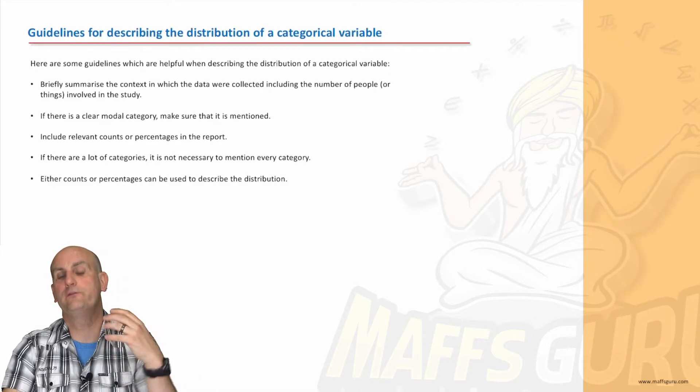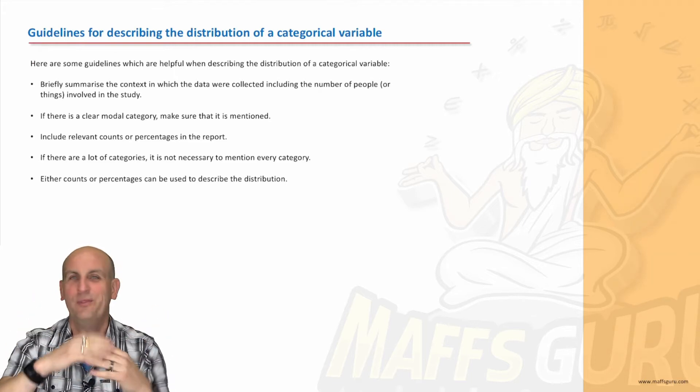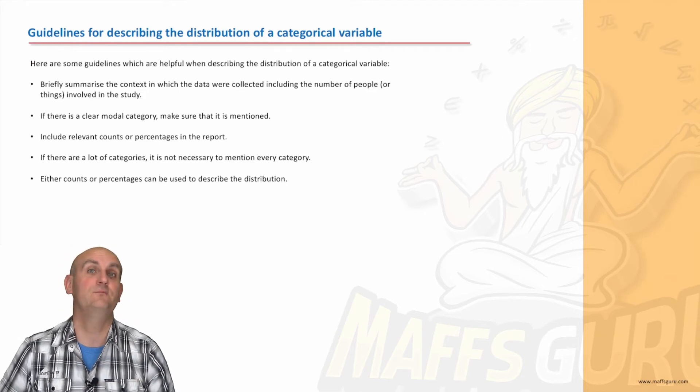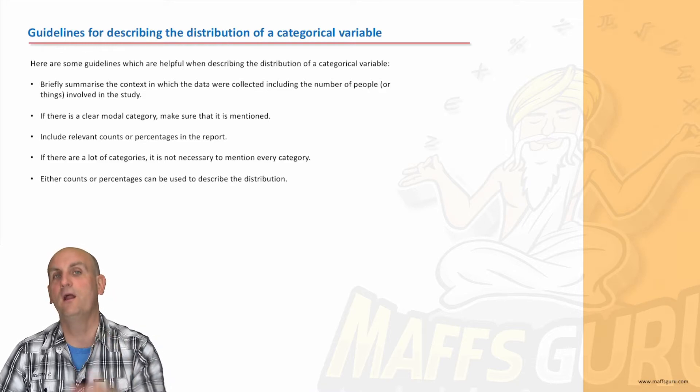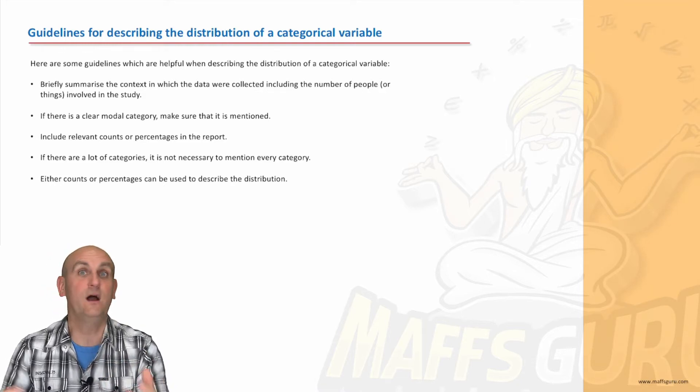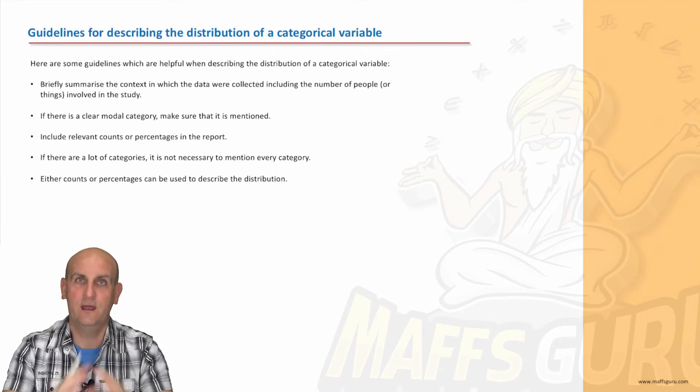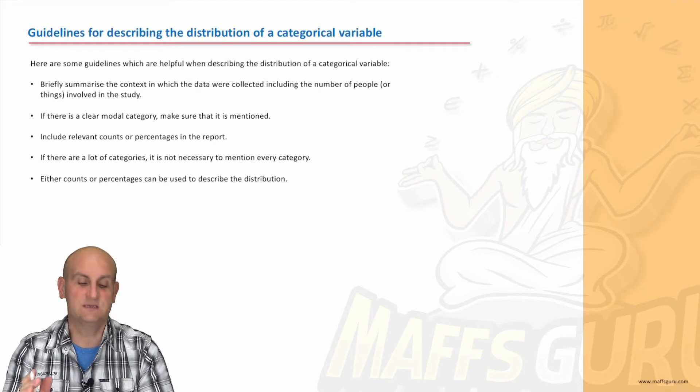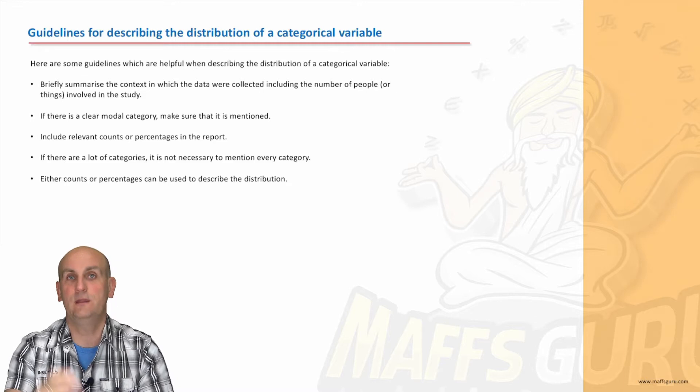Now when you are describing categorical variables and the distribution of the data, that just means a shape or the way that it currently looks, there are certain guidelines. And thank you very much to Cambridge for allowing me to use not only their examples, the sections of their textbook to try and highlight how important this is. And again, I just want to make maths easy for you guys. It is, trust me, smoke and mirrors and I'm going to break it down for you. So here are some guidelines.